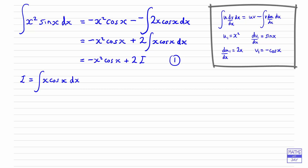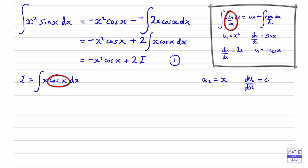Starting again — now you see why I used u1 and v1 earlier, because to apply the formula again I'm going to have a u2. That's going to be the power of x, which this time is just x, and my dv2/dx is going to be cos x. To use the formula I need to differentiate u2, and that gives me 1, which will make life a lot simpler. And v2 — integrating cos x — is sin x.